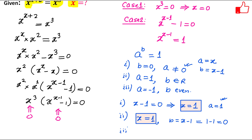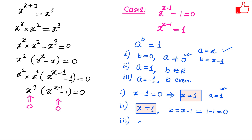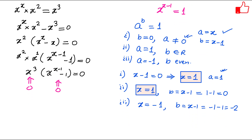Now the third case: a equals minus 1, so x equals minus 1. And b is x minus 1, which is minus 1 minus 1, so b equals minus 2. Minus 2 is an even number. So minus 1 raised to the power minus 2 becomes plus 1, because minus 1 raised to the power minus 2 can be written as 1 by minus 1 raised to the power 2, which equals 1 by 1, so this equals 1. This also satisfies the condition.